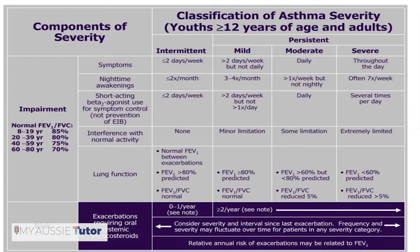Severe persistent asthma: symptoms occur throughout the day, nighttime awakenings often daily, short-acting beta agonists taken several times per day for symptom control, normal activity is extremely limited, lung function less than 60% FEV1 as predicted, and FEV1/FVC ratio reduced by greater than 5%. Exacerbations occur greater than twice a year and require oral systemic corticosteroids. To summarize: two types of asthma are intermittent and persistent, with persistent divided into mild, moderate, and severe. Components of severity include lung function, normal activity interference, use of beta-2 agonists, symptoms, and nighttime awakenings.